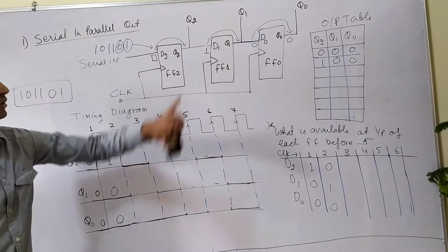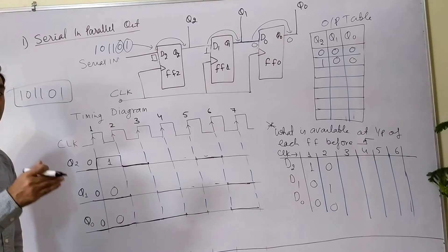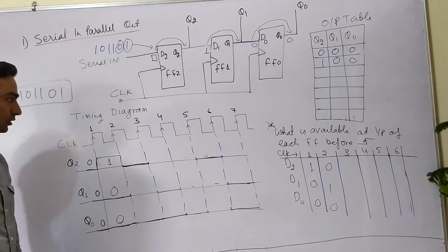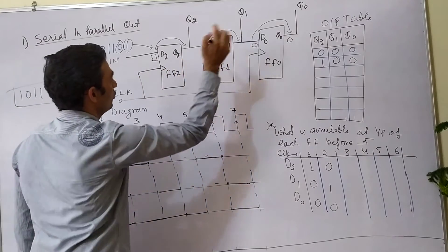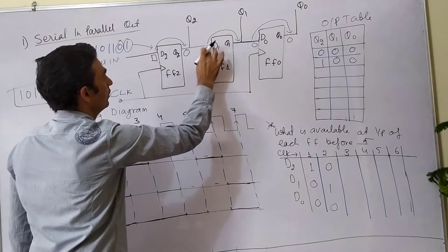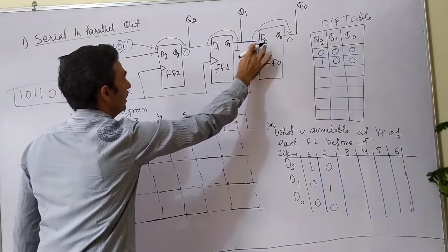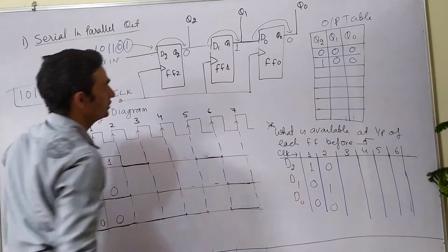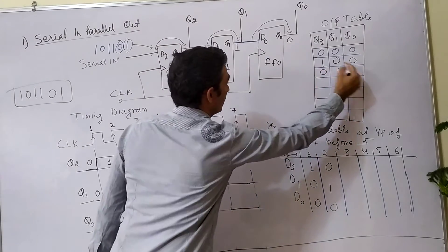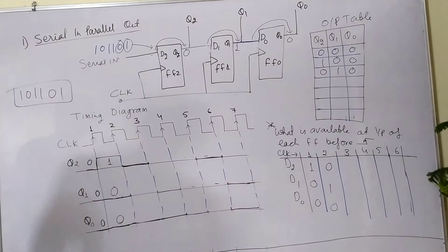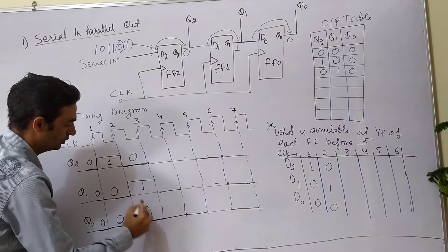Since D2=0, D1=1, D0=0 is at the input of each flip-flop, after the rising second clock edge the output will be Q2=0, Q1=1, Q0=0. So 0, 1, 0 will be output after the second clock edge.